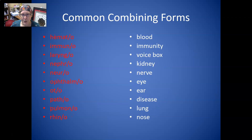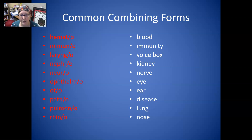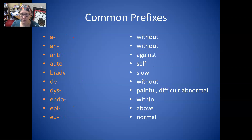Hemato is blood. Immuno is immunity. Laryngo is voice box. Nephro is kidney. Neuro is nerve. Ophthalmo is eye. Oto is ear. Patho is disease. Pulmono is lung. And rhino is nose.